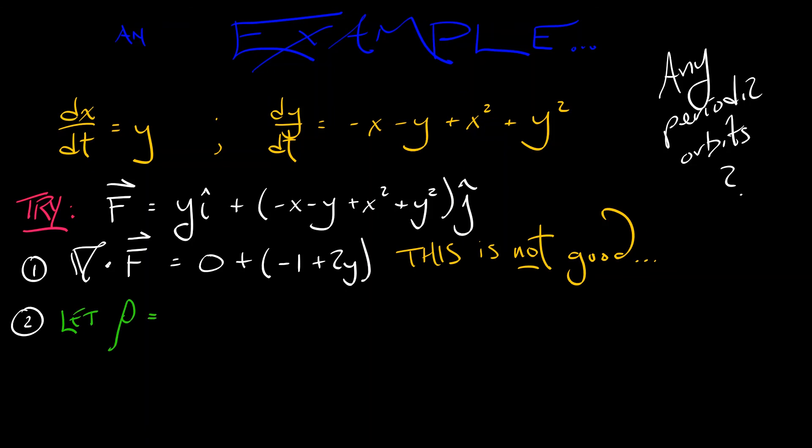Let's let rho be equal to, hmm, I don't know, e to the minus 2x. Aha! What happens in that case is that if I take the divergence of e to the minus 2x times this vector field,